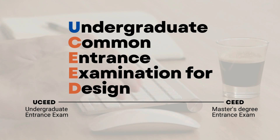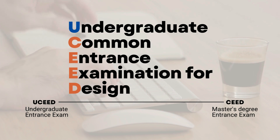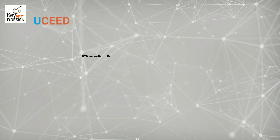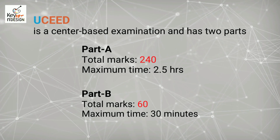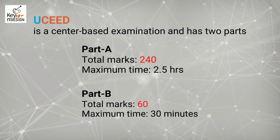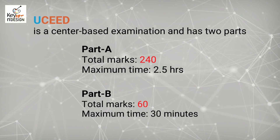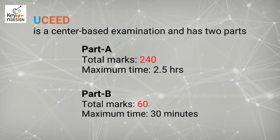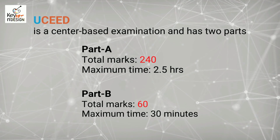Candidates looking for a bachelor program should enroll for UCEED, and those looking for a master's should proceed for CEED. UCEED is a computer-based examination and has two parts. Part A consists of a total of 240 marks with a maximum time of 2.5 hours, and Part B consists of 60 marks with a maximum time of 30 minutes.